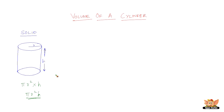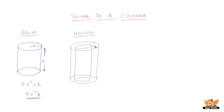Now, we have another type of cylinder, which is a hollow cylinder. Here, we have a hollow cylinder with height h, and we have two radii — one is the outer radius and one is the inner radius.